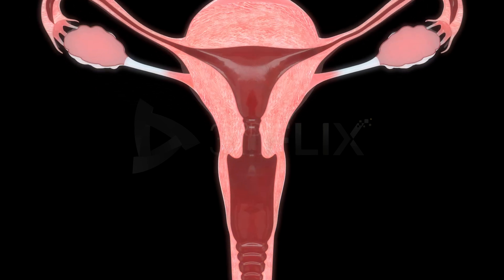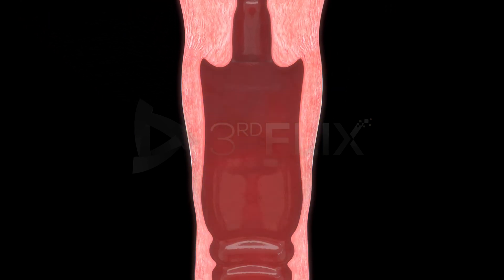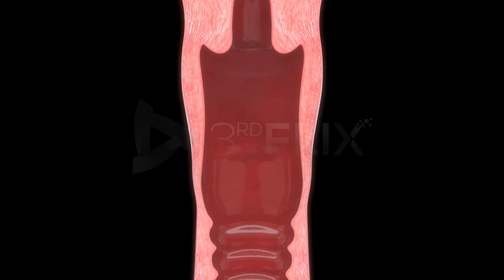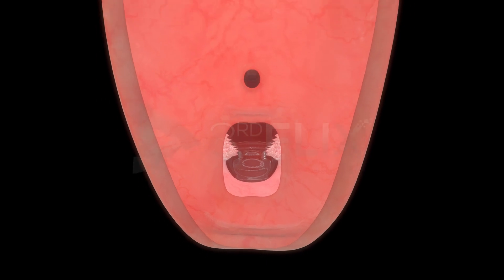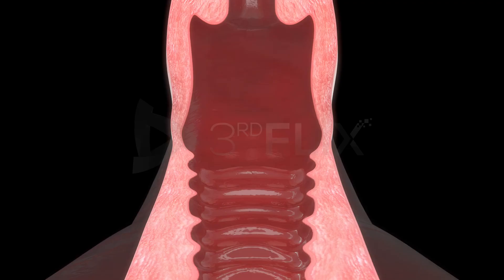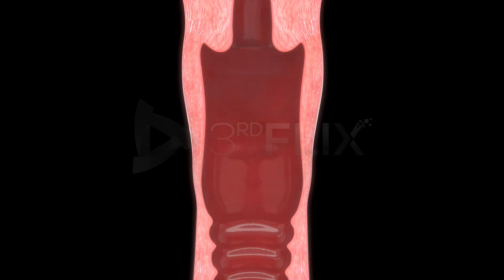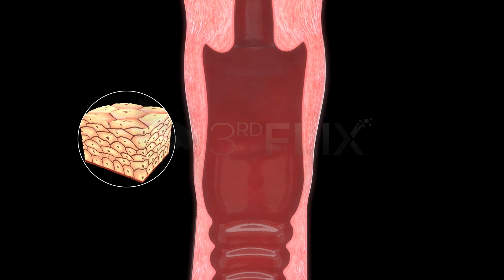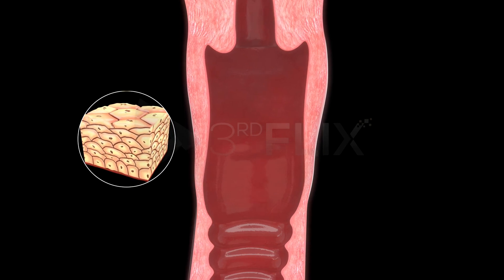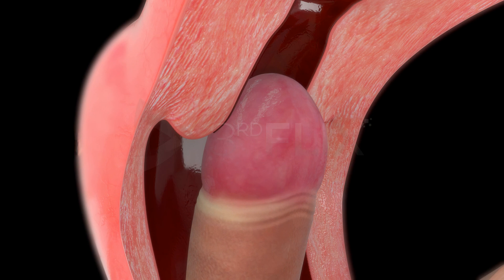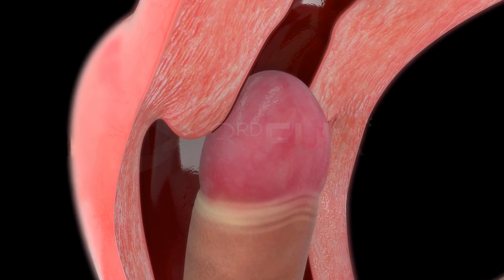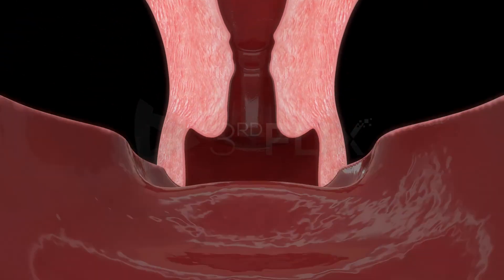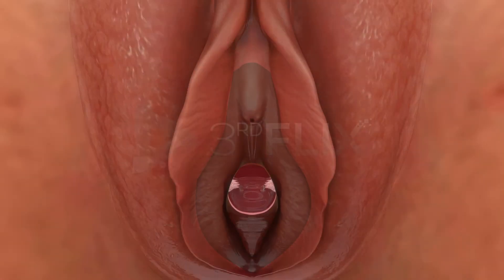The vagina is a large, median fibromuscular tube. It extends from the cervix to the vestibule. The vagina is internally lined by non-keratinized stratified squamous epithelium and is highly vascular. It serves to receive the penis during coitus, so it is called the copulation canal. The vagina opens into the vestibule by the vaginal orifice.